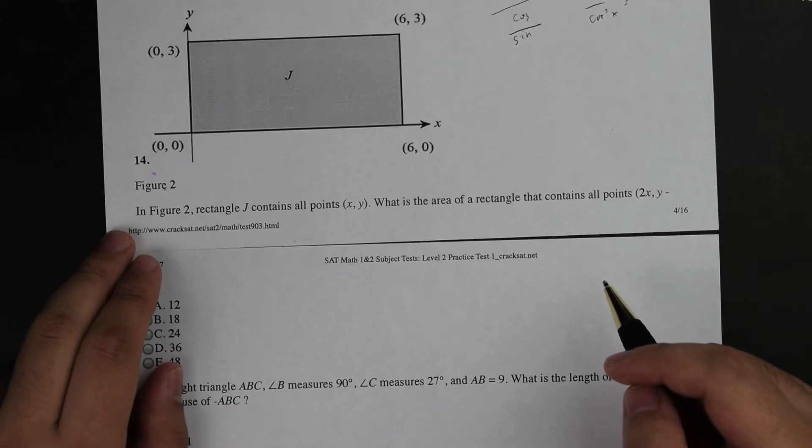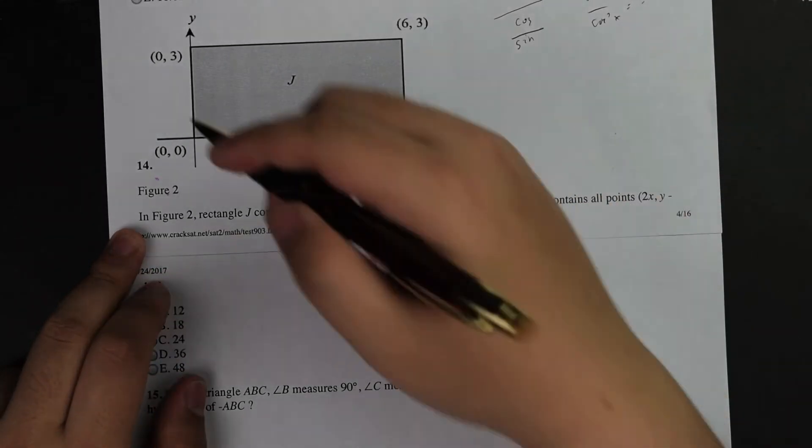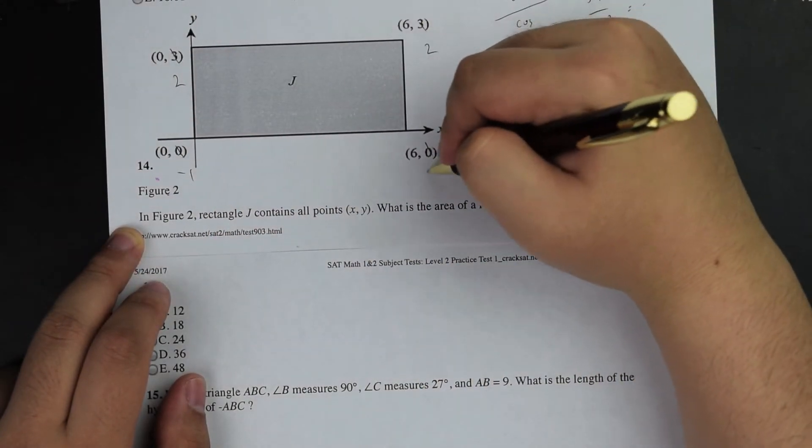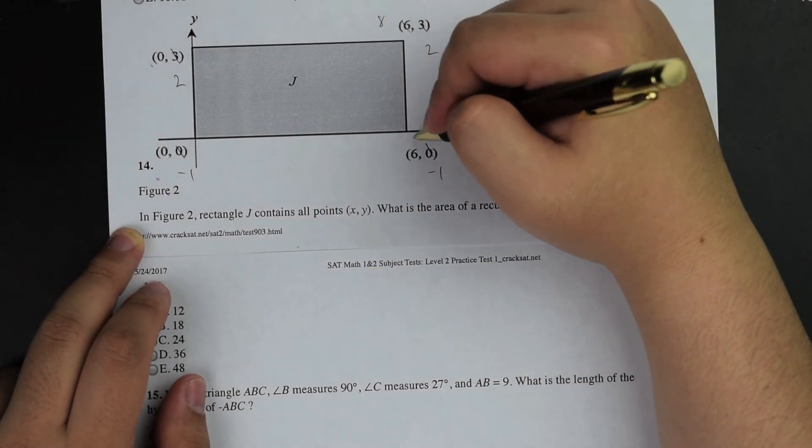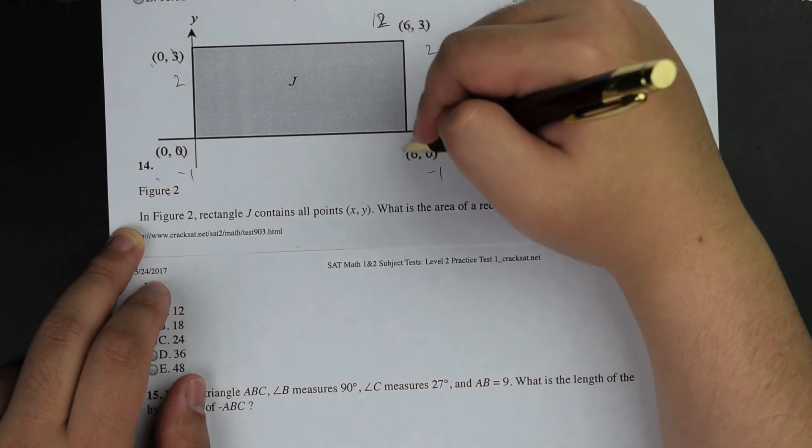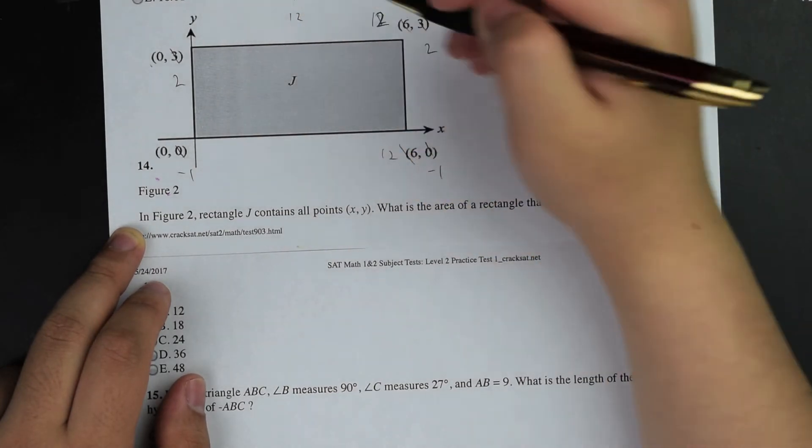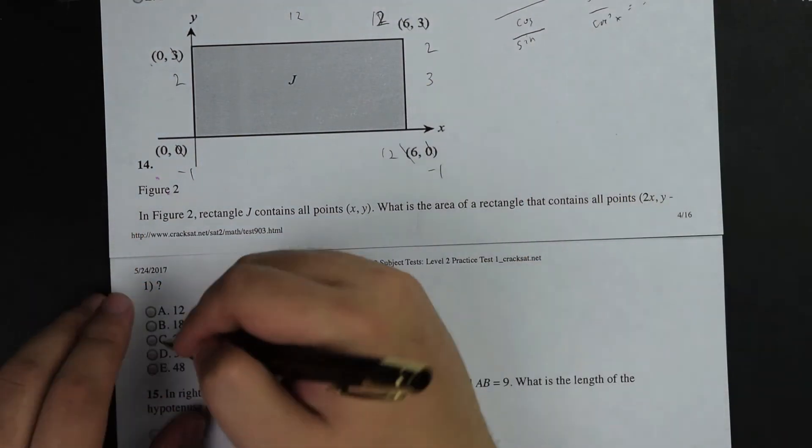y minus 1. So y minus 1, this will become negative 1, this will become 2. 2 times x, so 2, 2, it'll become 12. The distance between this will be 12. The distance between negative 1 and 2 is 3. So 12 times 3 is 36.